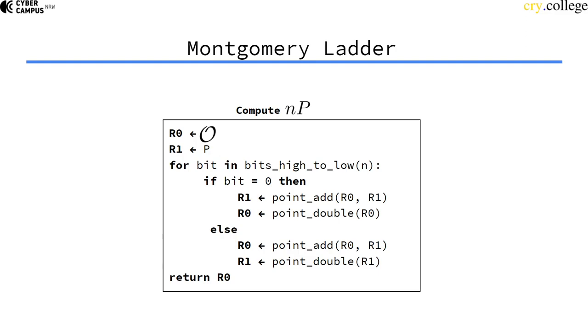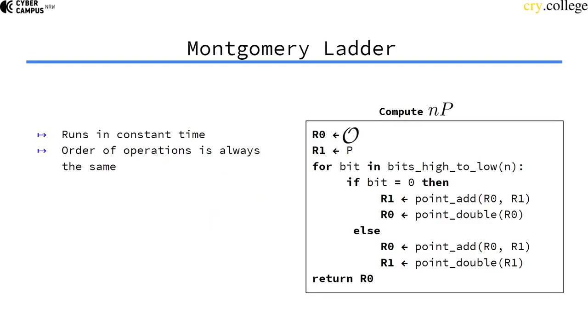The Montgomery Ladder uses the exact same operations in the exact same order, just flips operands. It runs in constant time, and the order of operations is always the same.